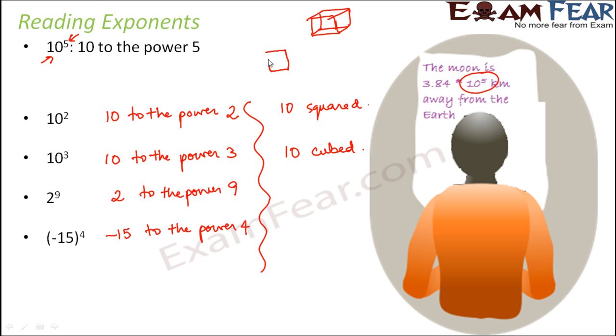That is why when the same number, that is 10, is getting multiplied for three times, it is called 10 cubed. Similarly, why it is called 10 squared? Because when you look at a square, you see that both the length and the breadth, that is two dimensions, are equal. So since here also 10, the same number is getting multiplied two times, it is called 10 squared.